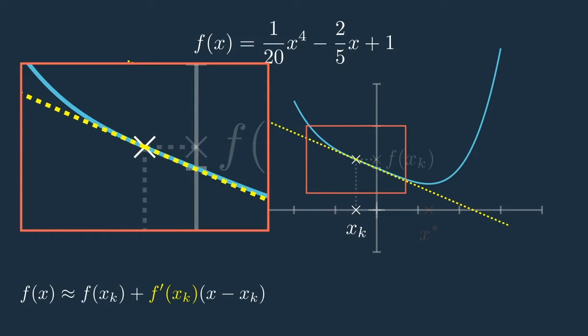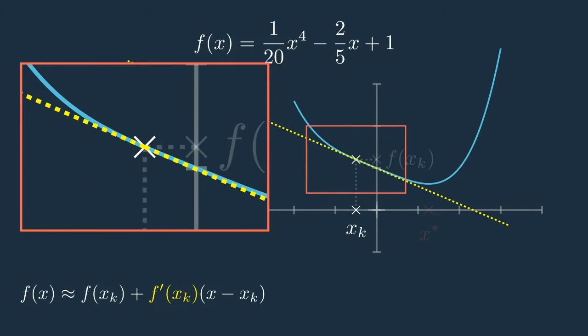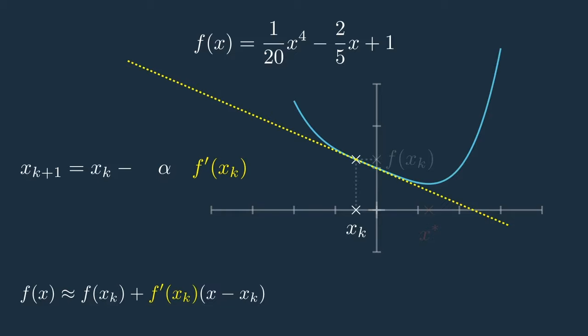So here is an idea: why not minimize the yellow linear function instead? Minimizing a linear function is the easiest thing in the world. If the slope is positive we go left; if the slope is negative, like here, we go right. In both cases, what we're doing is subtracting a positive multiple of the derivative from our current iterate. Alpha here is called the step size. A linear function is typically unbounded, so alpha shouldn't be too large — far from x_k, the blue and yellow functions may behave completely differently. If alpha is too large we might overshoot; if too small, we take far more iterations than needed. Trying to tune alpha optimally is what leads us to Newton's method.